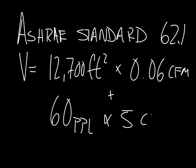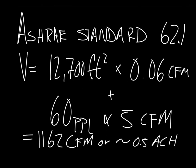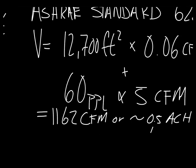we need to account for the occupants. The 60 workers require 5 CFM each. This brings us to a total of 1,062 CFM. Assuming 10-foot ceilings, this is about half an air change per hour.